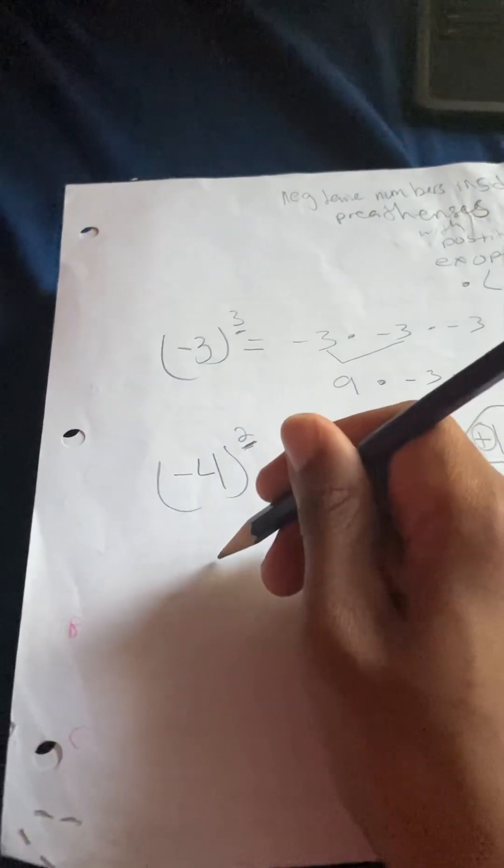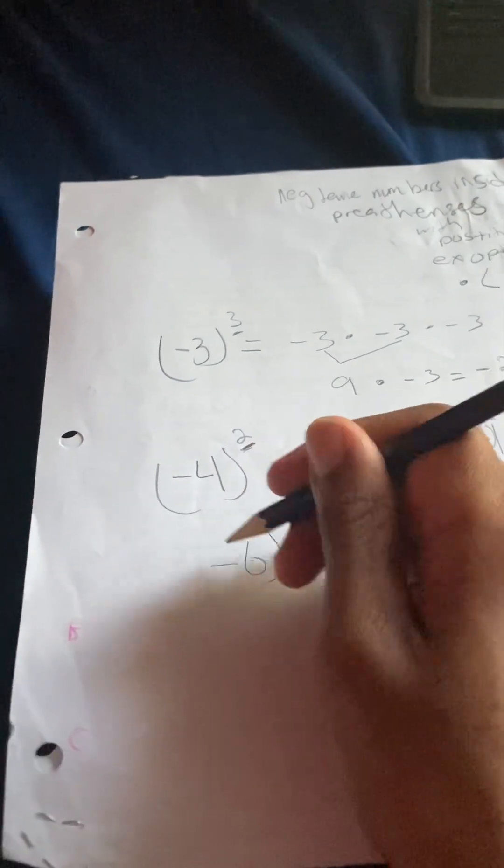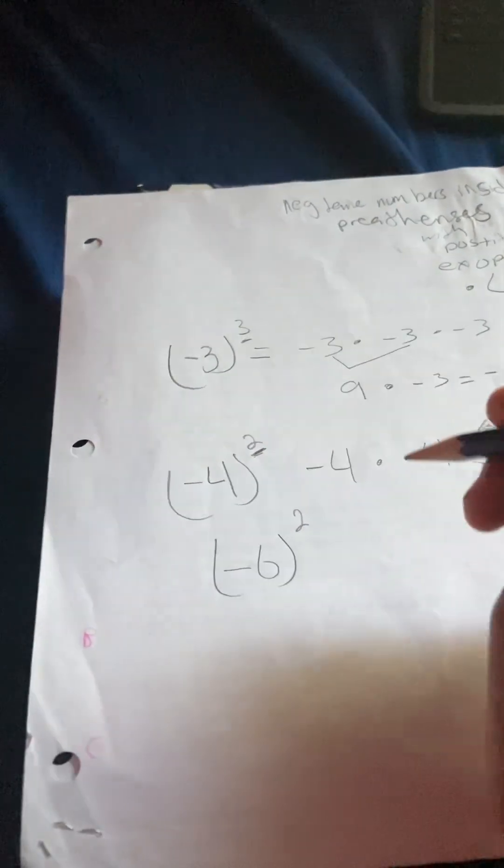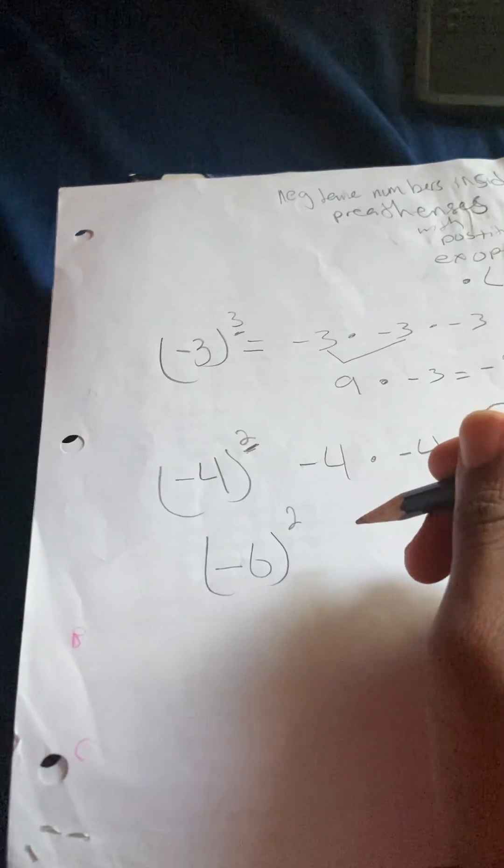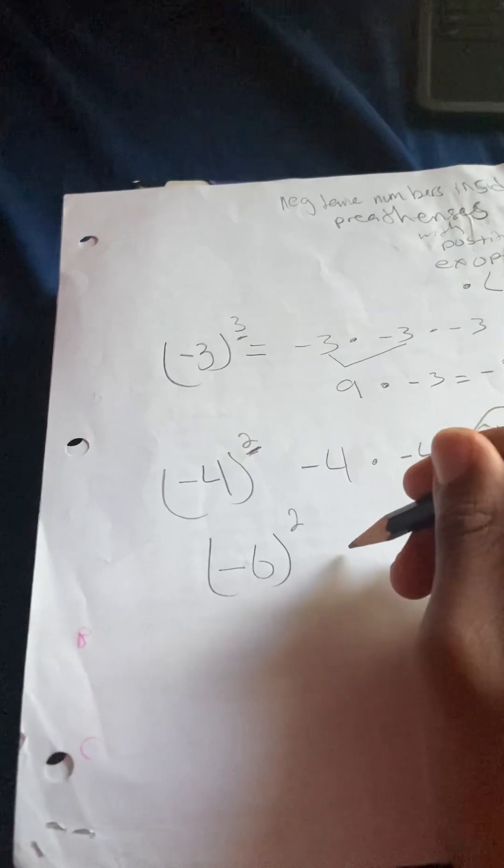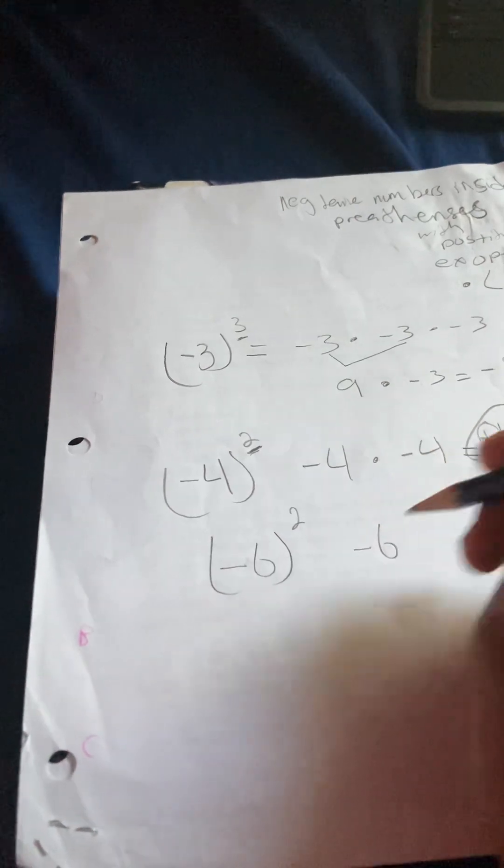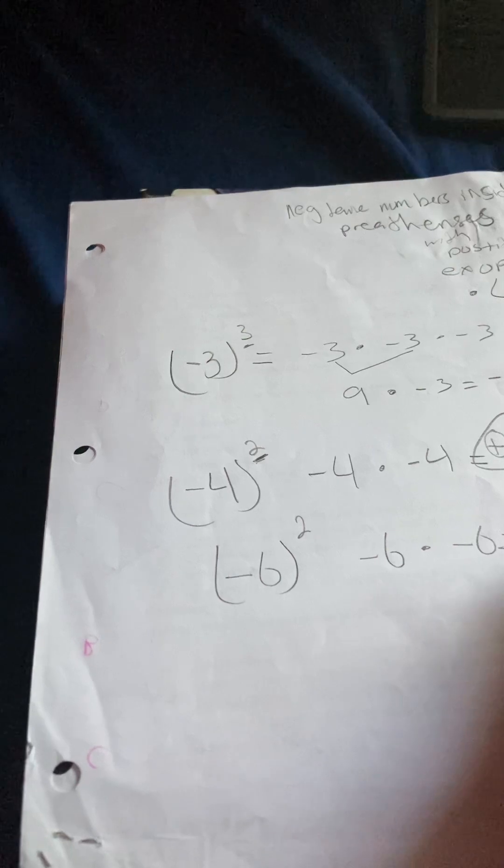So now we do one more example. Let's do negative 6 to the second power. Negative 6 to the second power is the same thing as doing negative 6 times negative 6, which equals 36.